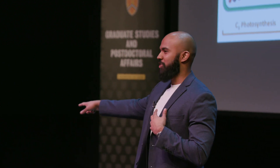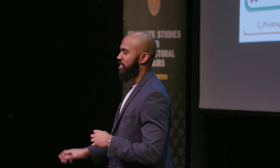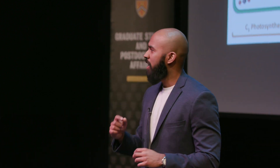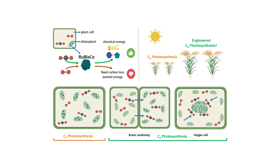In C4 plants, rubisco is kept separate from oxygen — the distraction — and energy is spent to collect, transport, and concentrate carbon dioxide around rubisco. For example, in Kranz Anatomy C4, rubisco is kept in a separate cell layer, and carbon dioxide gets actively shuttled into that cell layer, leaving oxygen behind.